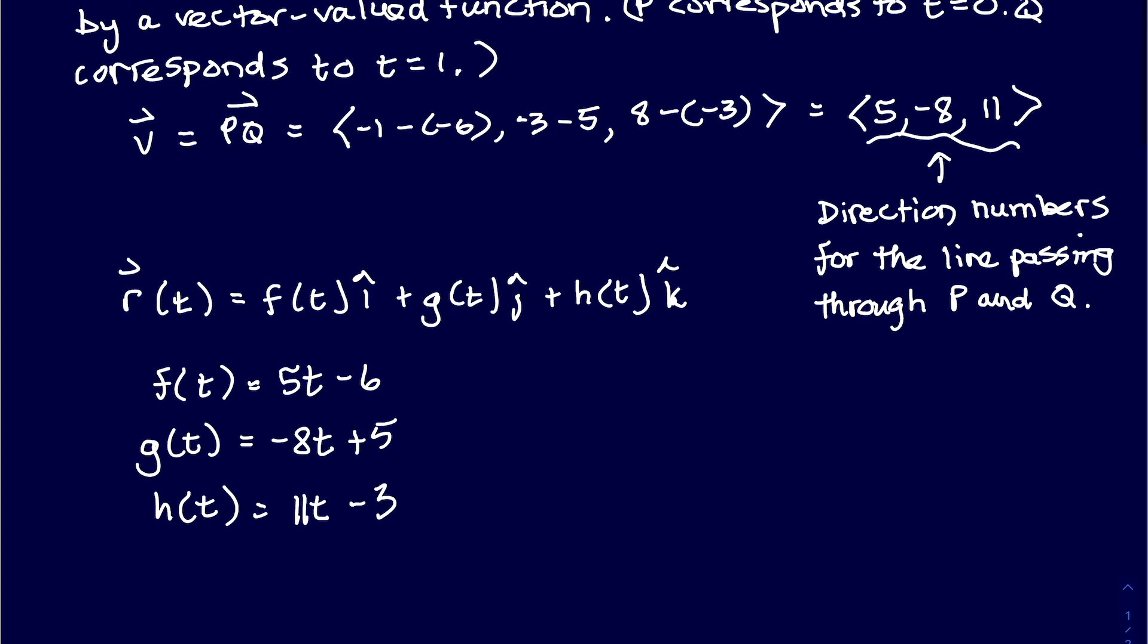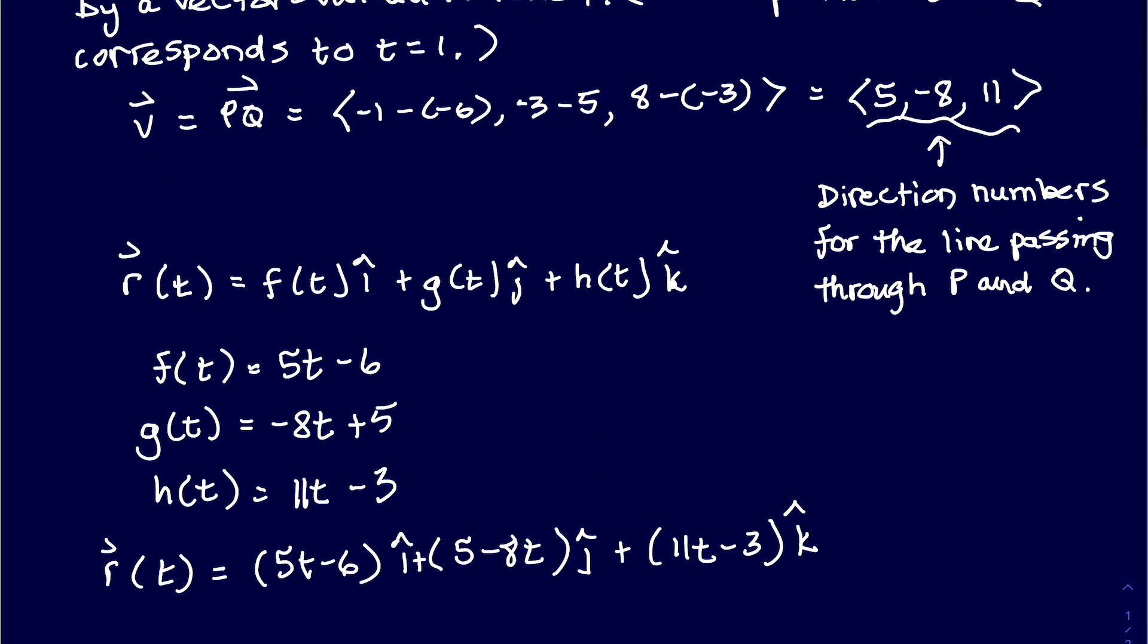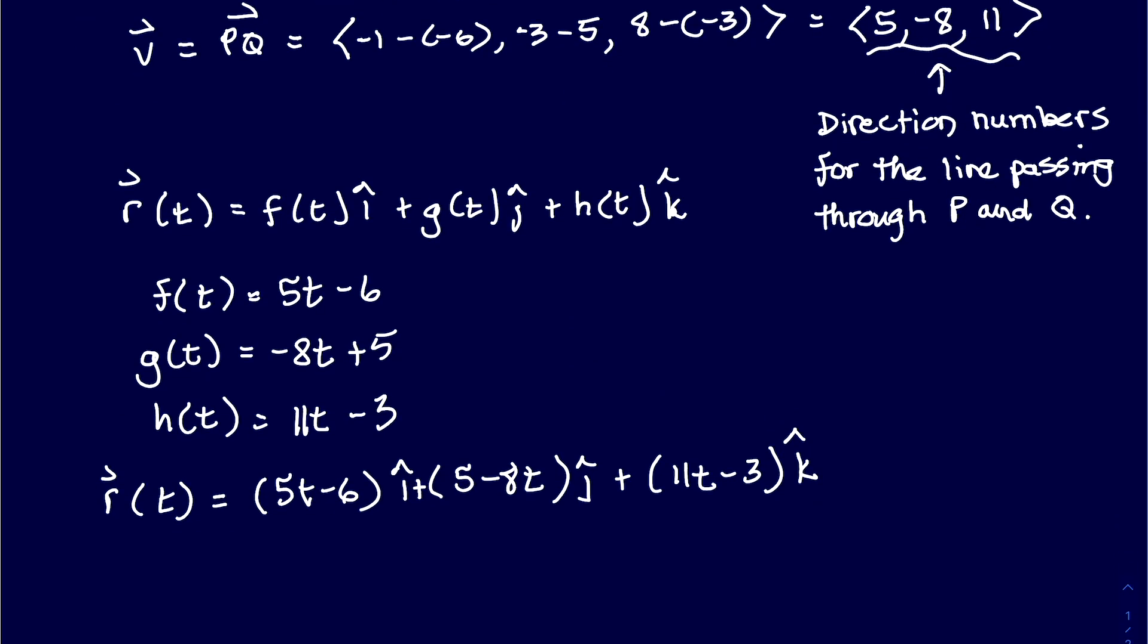And our h(t) will be 11t and then minus 3. So r(t), putting in that information, will be f(t) was 5t - 6 times i. So g(t), we'll make it prettier, we'll write it as 5 - 8t, that's times j. And then plus h(t) is 11t - 3, and that'll be times k. So that is how you would represent it by a vector-valued function.